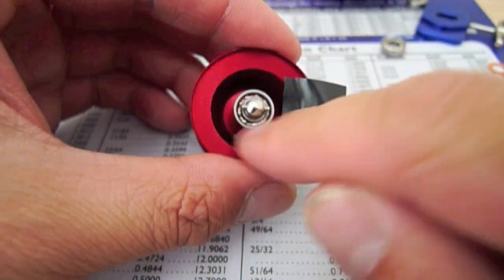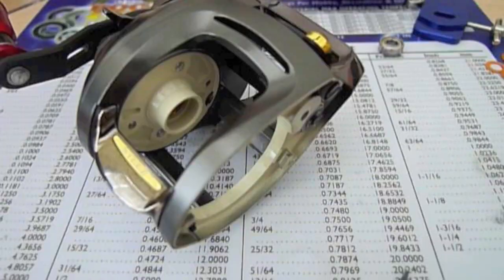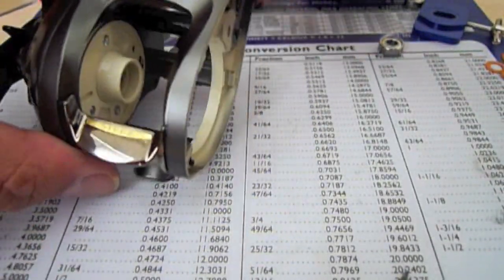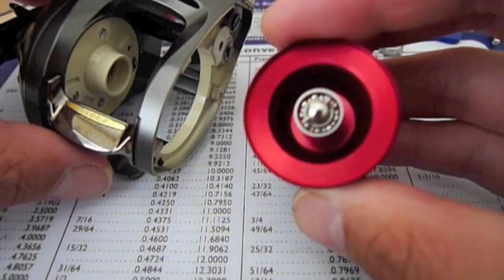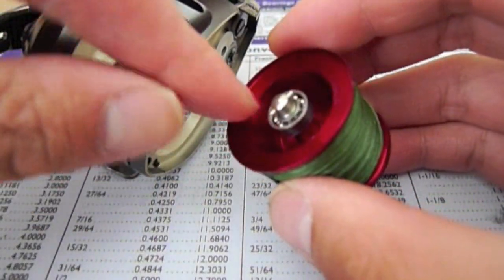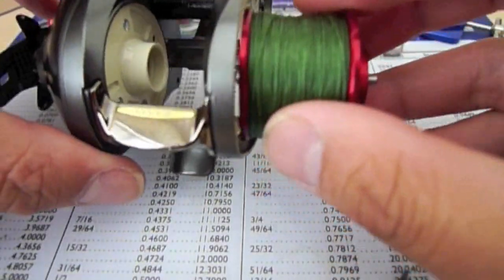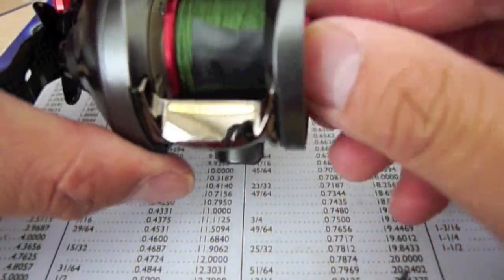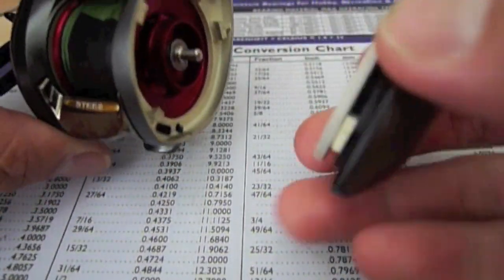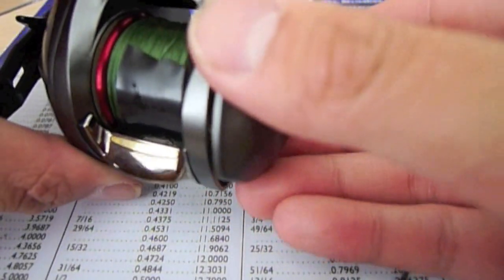And there, you just changed the bearing on the spool. The last step is going to be reinstalling everything. We're going to take the spool with the bearings facing the inside of the reel and push it back in. And reinstall the side plate.